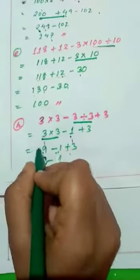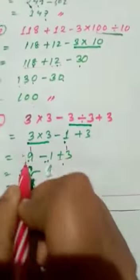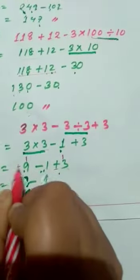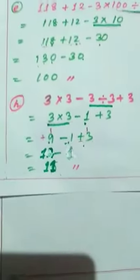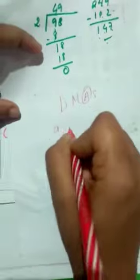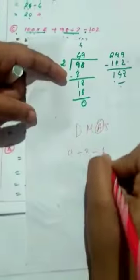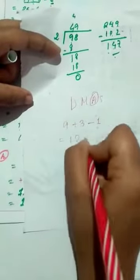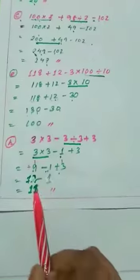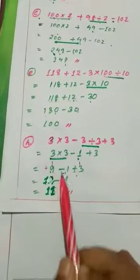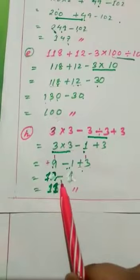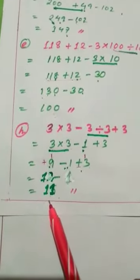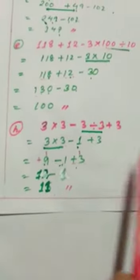So we have 9 minus 1 plus 3. There is no sign before 9, so it is positive. We have to follow DMAS and do the addition work first: 9 plus 3 is 12, then 12 minus 1 gives 11. So the answer is 11. I hope it is clear how to simplify the numerical expression using all four operations together.